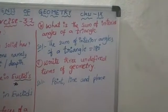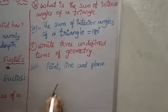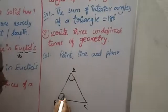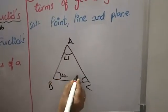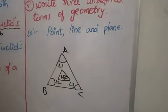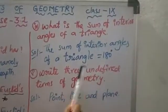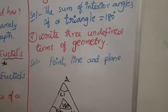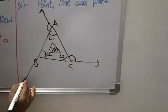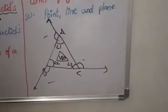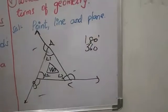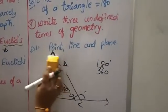Fourth question: what is the sum of the interior angles of a triangle? In triangle ABC, there are 3 interior angles — angle 1, angle 2, and angle 3. The sum of these 3 interior angles is always 180 degrees. The sum of the exterior angles of a triangle is 360 degrees. That is the difference between interior and exterior angles of a triangle.